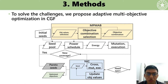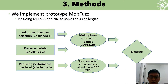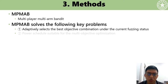To solve these challenges, we propose adaptive multi-objective optimization in CGF. The uncolored parts in this figure are the procedures of AFL, and the colored parts are the new techniques we propose. To solve challenge one (adaptive objective selection) and challenge two (proper schedule), we propose Multi-Player Multi-Armed Bandit, MPMAB. To reduce performance overhead (challenge three), we propose a Non-dominated sorting genetic algorithm in CGF, NIC. Based on MPMAB and NIC, we implement the prototype MOB-Fuzz.